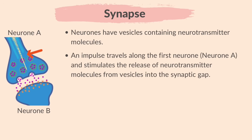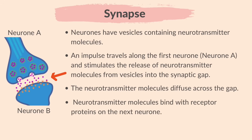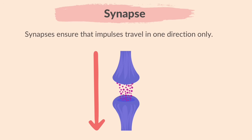An impulse travels along the first neuron — Neuron A — and stimulates the release of neurotransmitter molecules from vesicles into the synaptic gap. The neurotransmitter molecules diffuse across the gap and bind with receptor proteins on the next neuron. An impulse is then stimulated in the next neuron. Synapses ensure that impulses travel in one direction only.